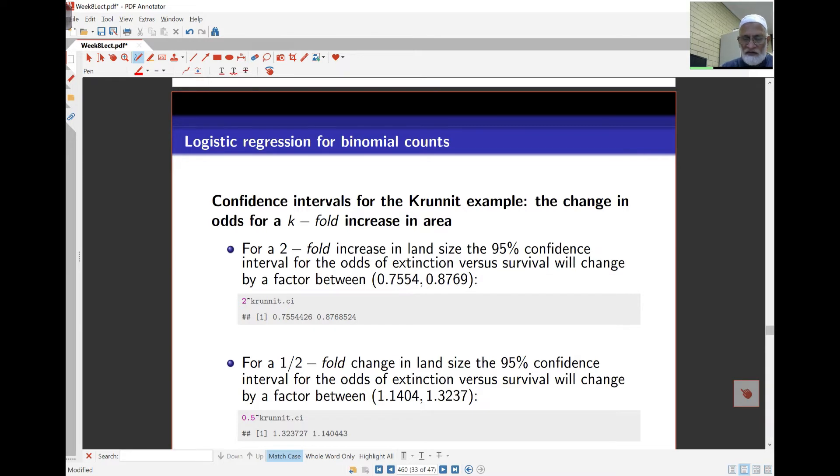If I want the confidence interval for a change in the odds for a k-fold increase in area, then what we said was it's going to be 2 to the power of beta, so 2 to the power of the confidence interval we have. It's essentially 2 to the power of the confidence interval I looked at earlier, and gives me the numbers as 0.755 and 0.8756. So if I increase the area by two-fold, then the odds of survival confidence interval is 0.755 to 0.876.